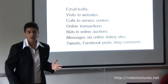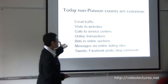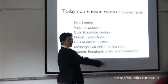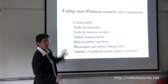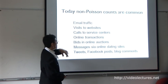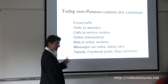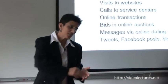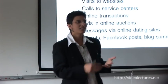Obviously count data are all around us. By counts we mean integer data where we're counting events. Examples today include email traffic, visits to websites, calls to service centers, online transactions, bids in online auctions, messages via online dating sites, number of tweets, and Facebook posts — and you can go on and on. As long as we're not talking about millions of counts and you're in the smaller range of zeros, ones, twos, threes, fours, you can't really use continuous distributions.